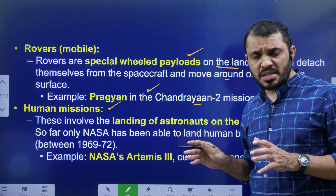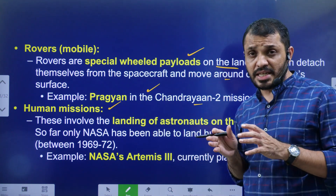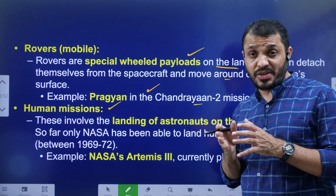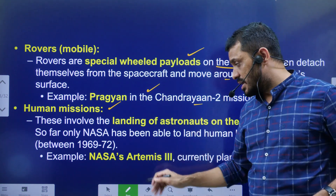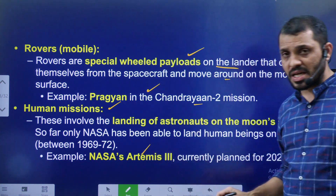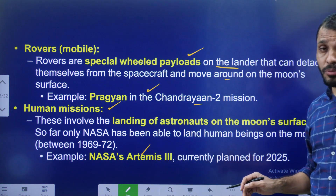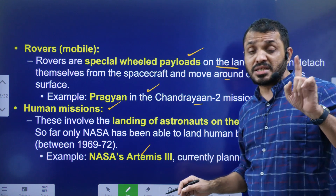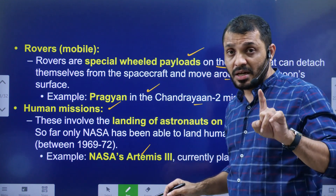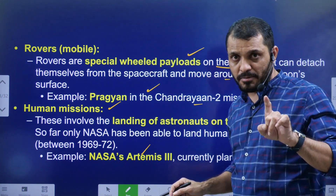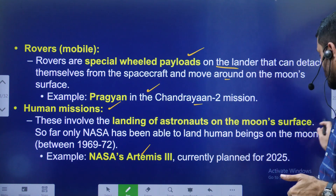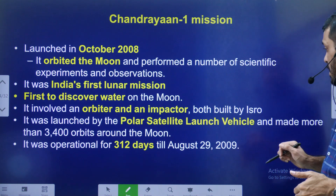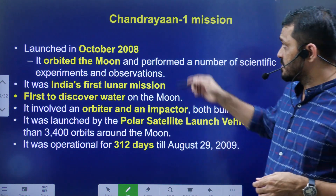Number six: Human missions — directly sending humans onto the surface of the moon. We have already seen this in the form of NASA's Apollo mission. Now NASA is also planning the Artemis program, through which they are going to send humans onto the moon's surface again.